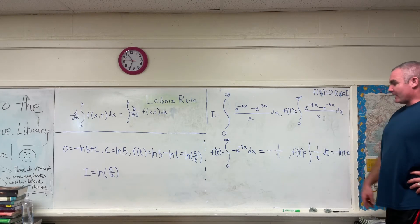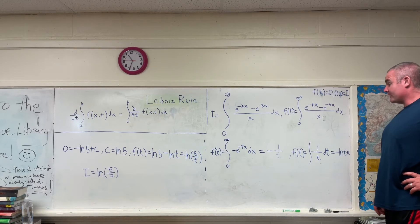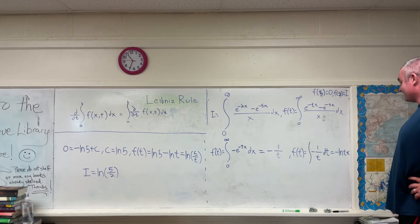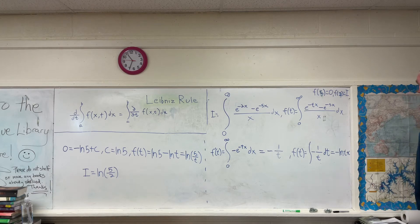Again, we're not interested in what f prime of t is. We're interested in what f of t is. So, again, all we've got to do is integrate f prime of t to get f of t. When you do that, you get negative natural log of t plus a constant of integration. Very important constant of integration right there.